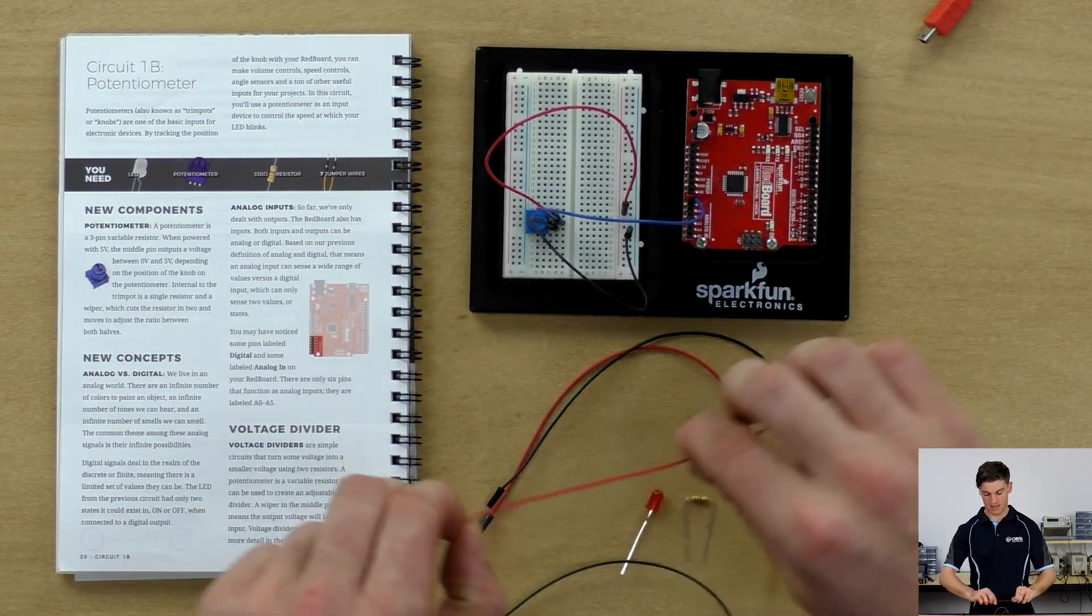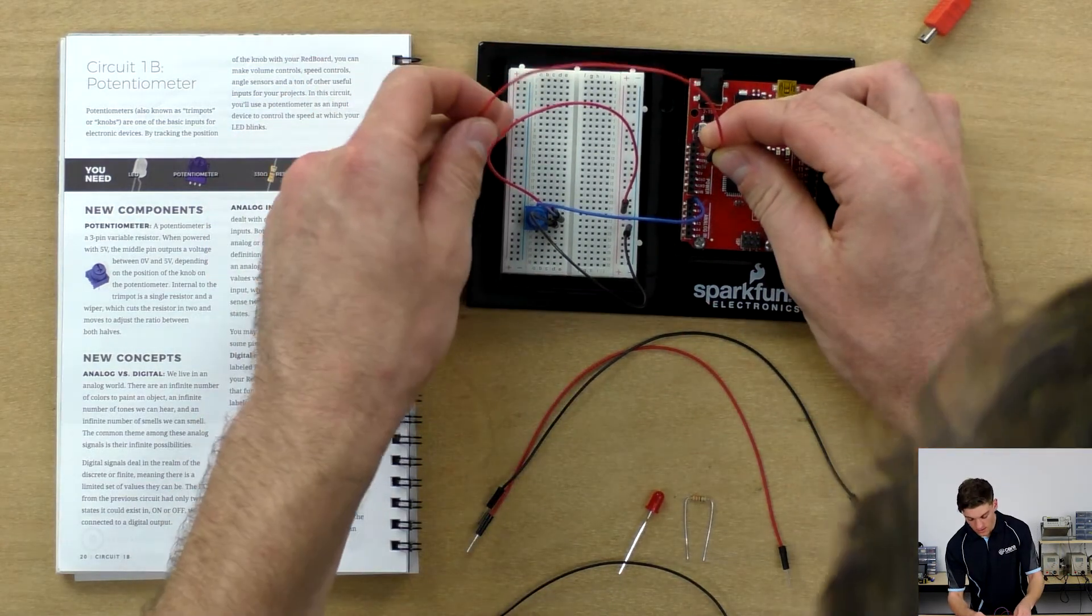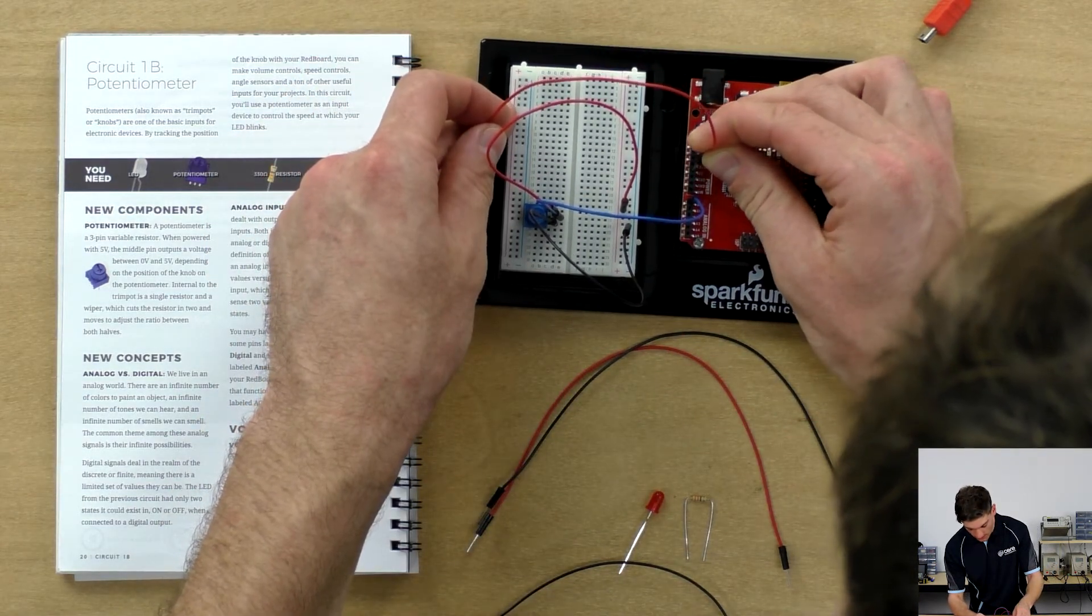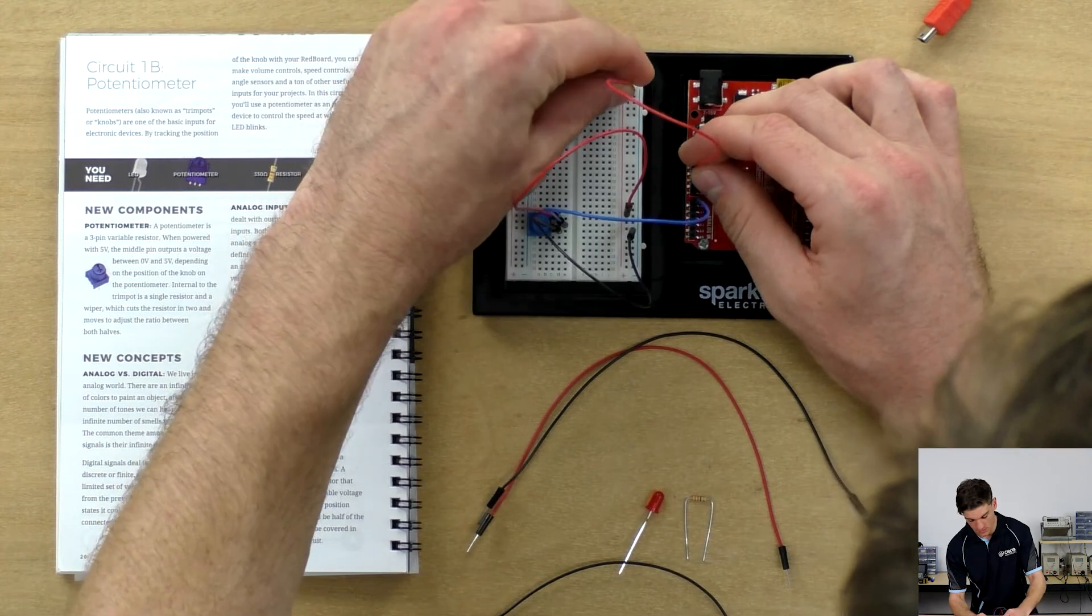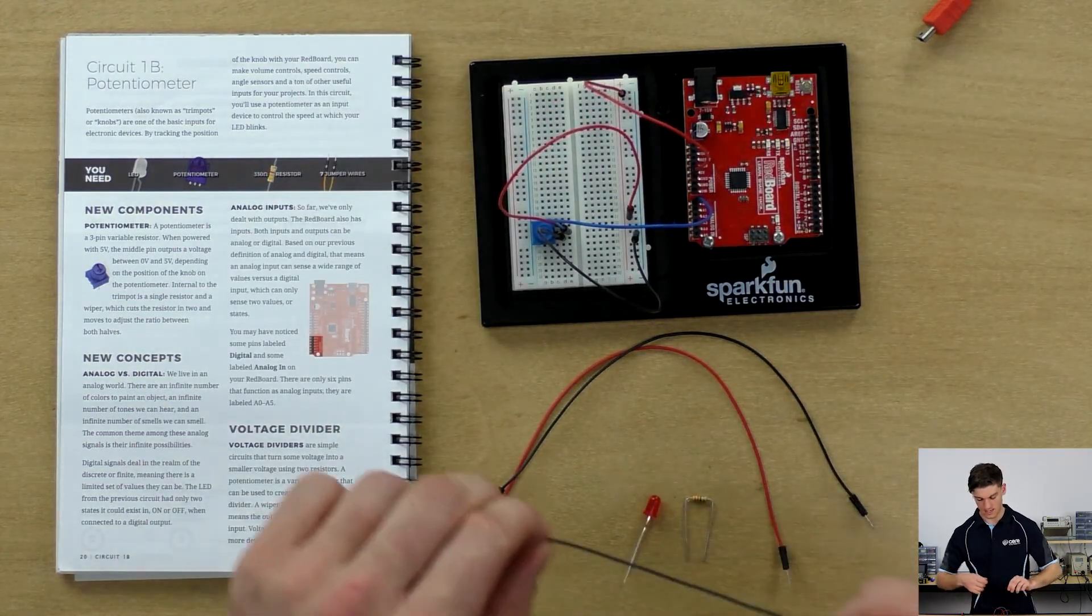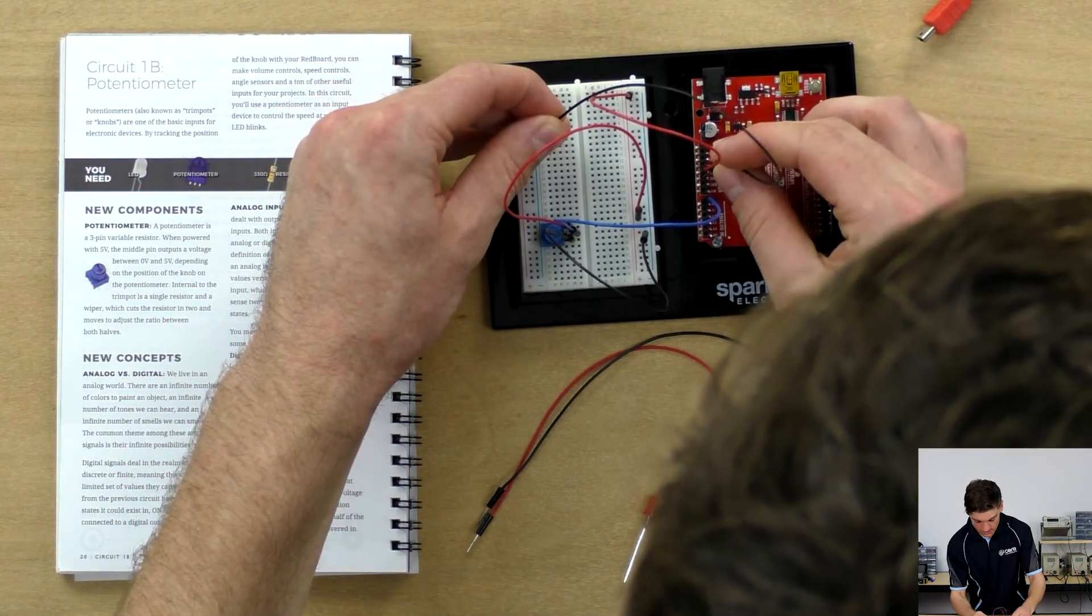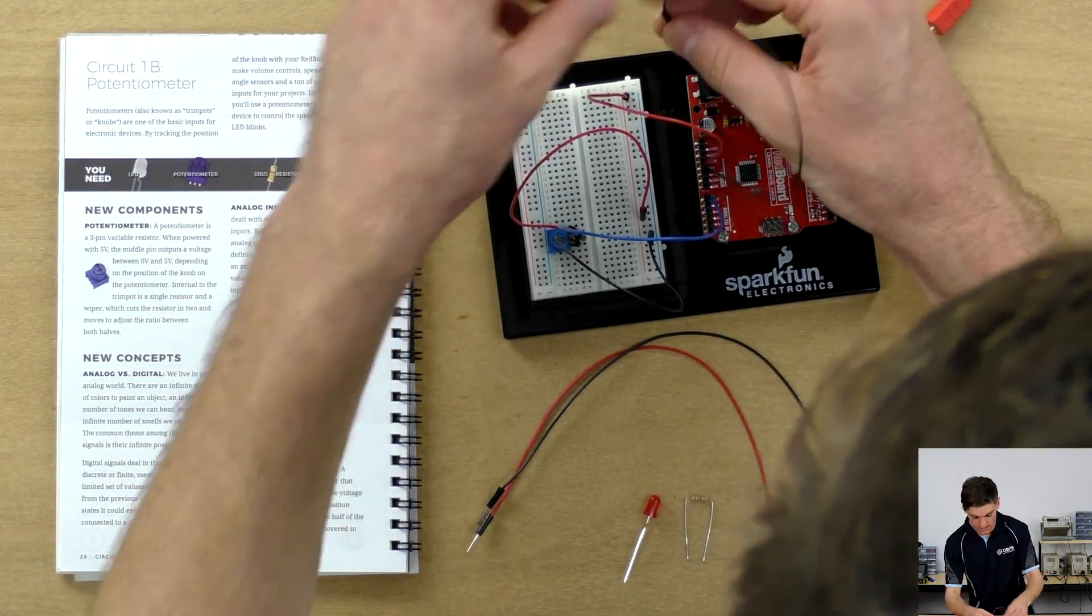We're going to connect the power bus. We're going to have plus 5 volts connected to the positive and ground connected to the negative.